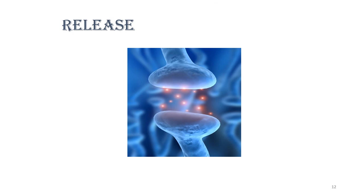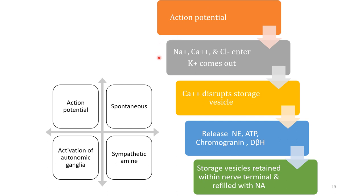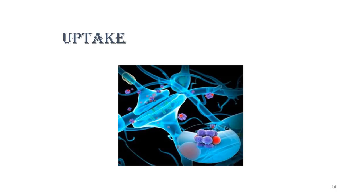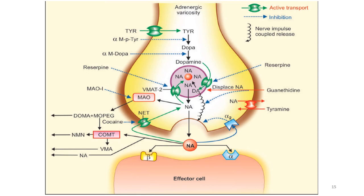Regarding release of norepinephrine: when action potentials generate, sodium, calcium, and chloride enter and potassium exits, causing depolarization. Calcium disrupts vesicle storage, vesicles move toward the membrane, and norepinephrine is released into the synaptic cleft. Storage vesicles are retained in the nerve terminal and refilled. Uptake-1 is the neuronal uptake, inhibited by cocaine. Uptake-2 is the transport from cytoplasm back to the vesicle, inhibited by reserpine.